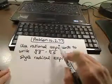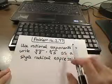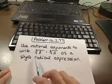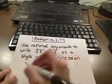Okay, so this is problem 10.2.77. They want us to use rational exponents, which are fractional exponents, to write the fourth root of 8 times the cube root of 5 as a single radical expression.